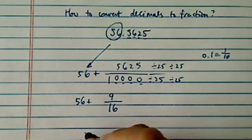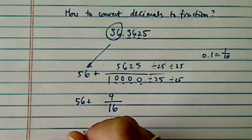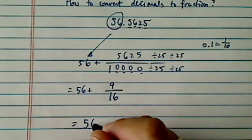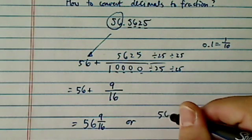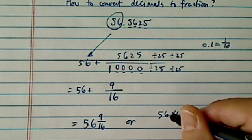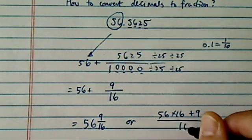From there onward, the fraction in the proper form, you can write 56 and 9 sixteenth, or if you want, writing to the improper form, it's 56 times 16 plus 9 over 16.